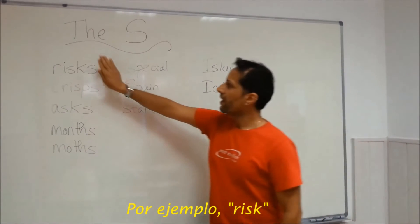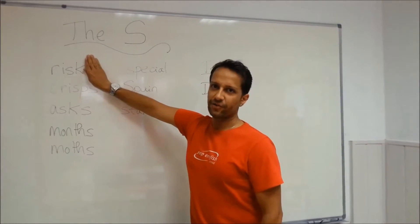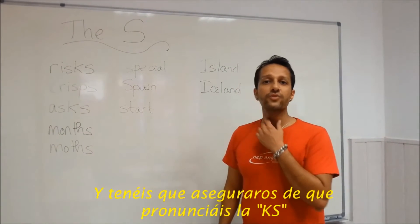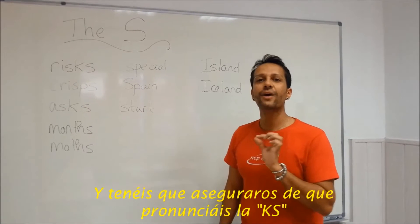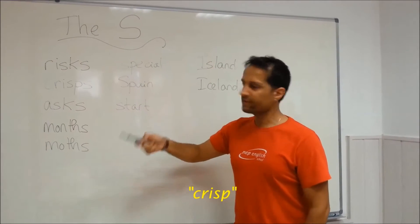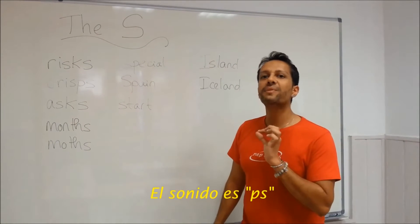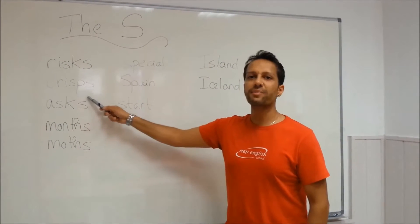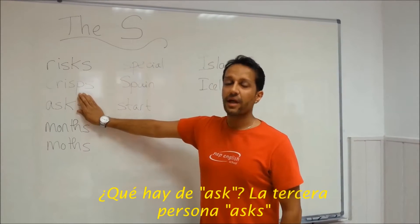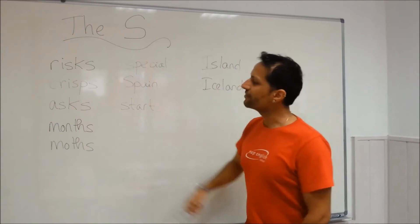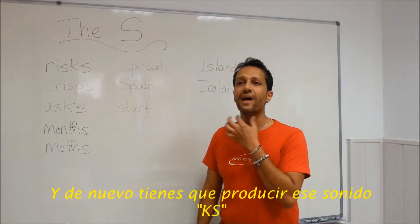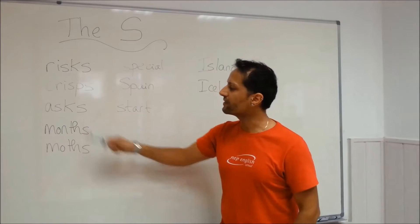For example, 'risk' — riesgo. The plural is 'risks.' You have to make sure that you pronounce the 'ks' sound, okay? Risks. 'Crisp' — patata de bolsa. The plural is 'crisps,' and the sound is 'ps' — crisps. What about preguntar? 'Ask.' The third person — tercera persona — is 'asks.' And again, you need to reproduce that 'ks' sound. Asks.